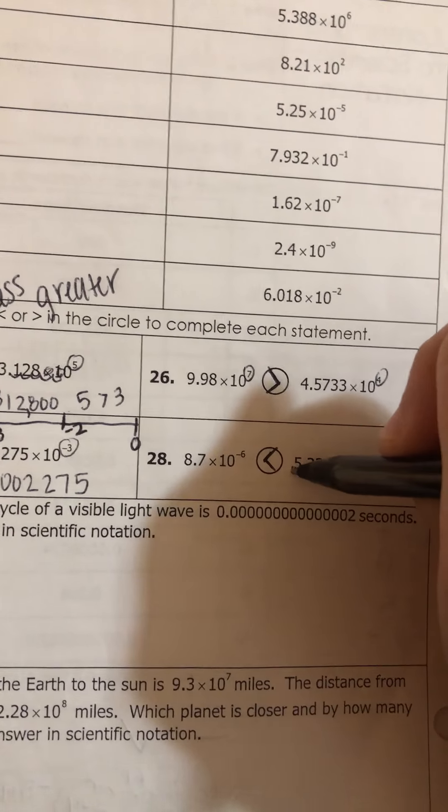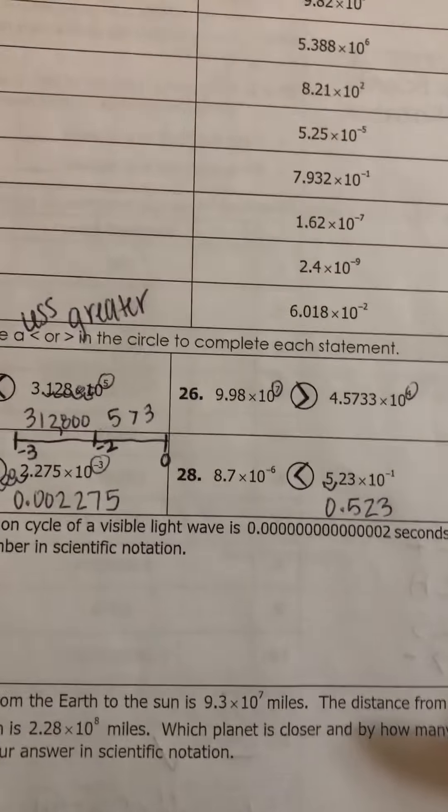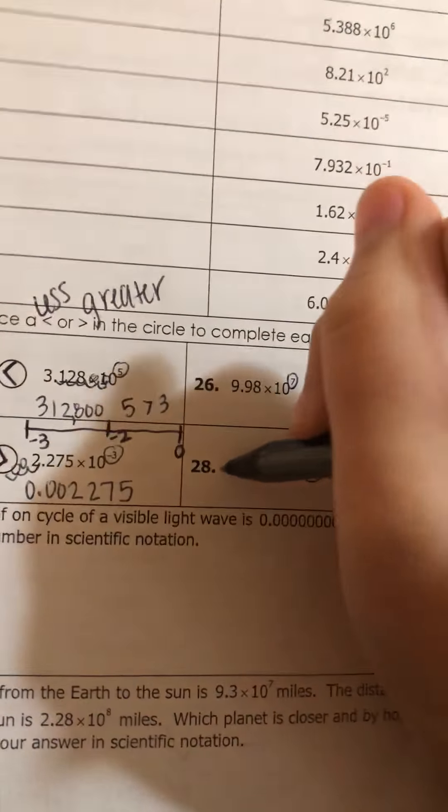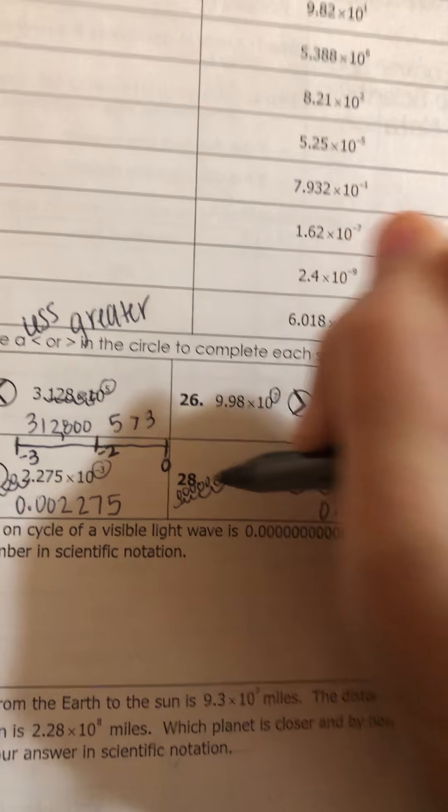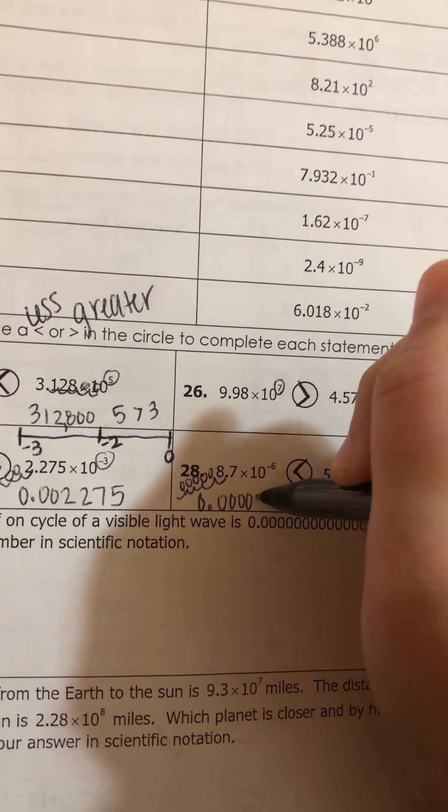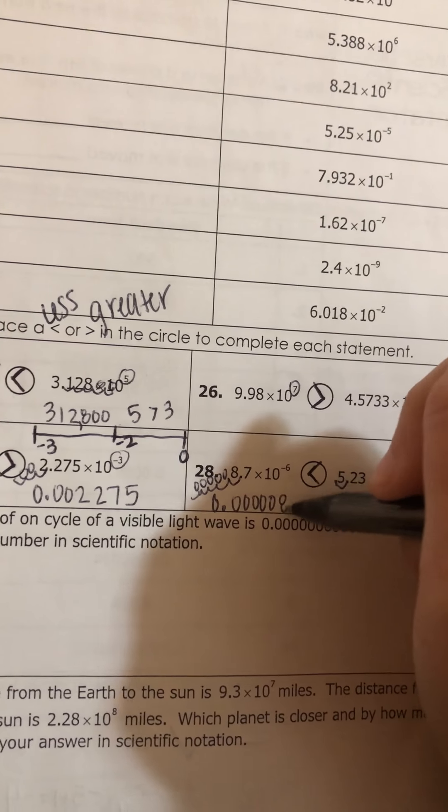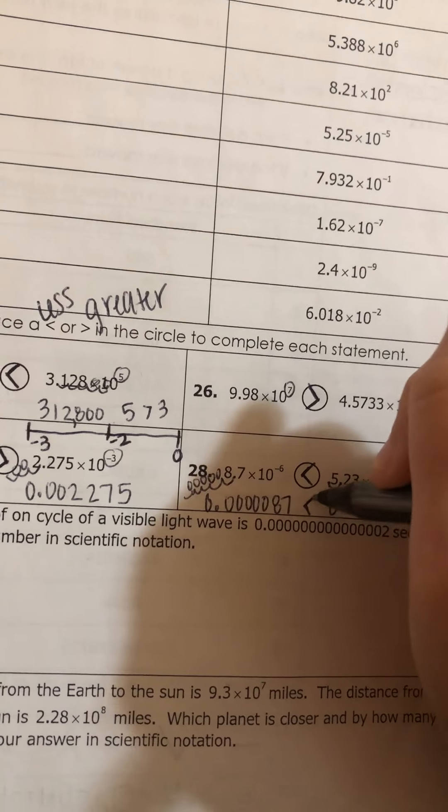You could have also quick checked by doing the standard form. So this one would have been 0.523, and then this one had to swoop 6 times. So that would have been 0.000087, which is a really tiny number, much smaller than this one. So that would have also had the less than.